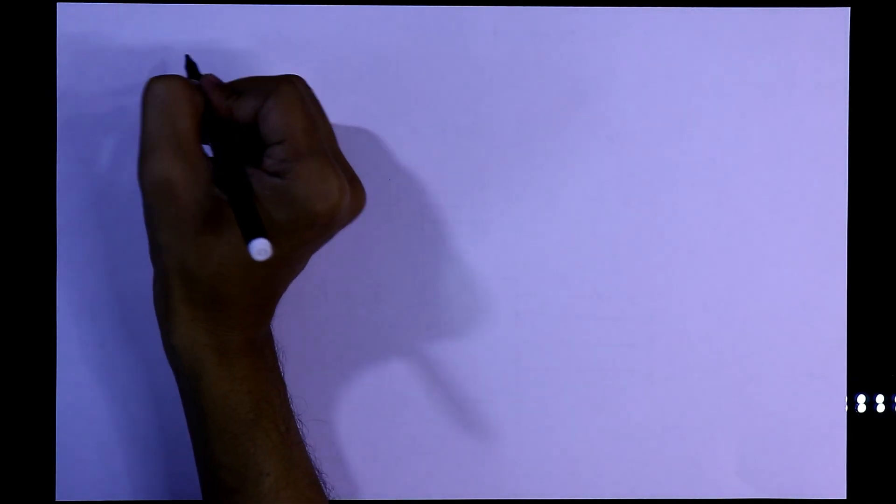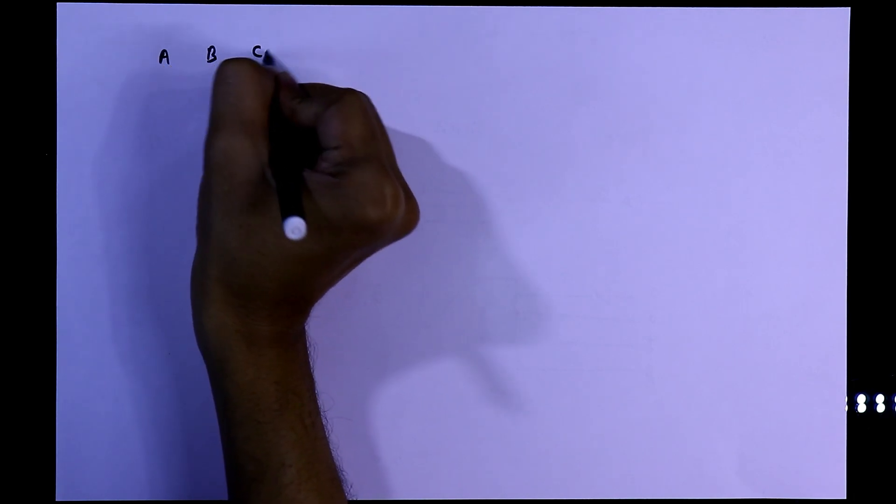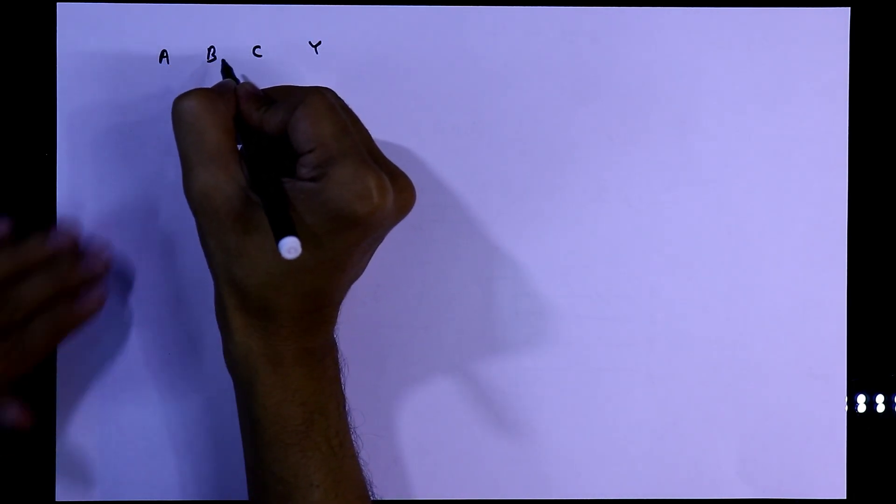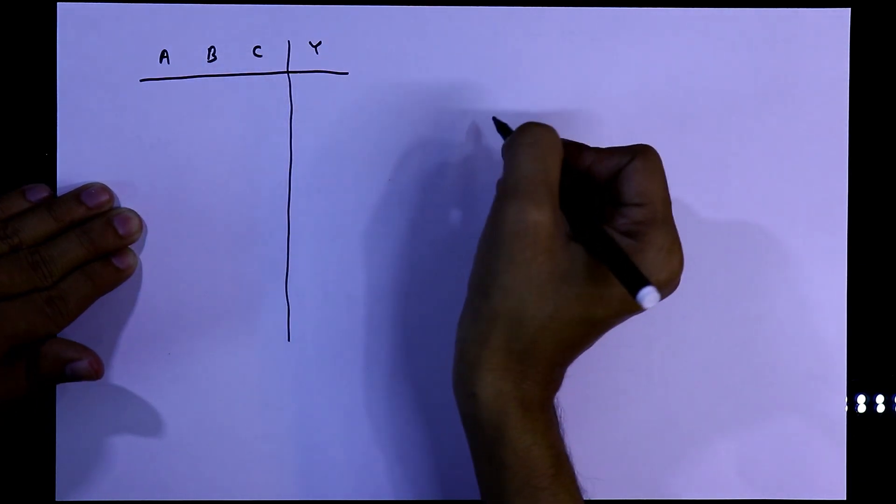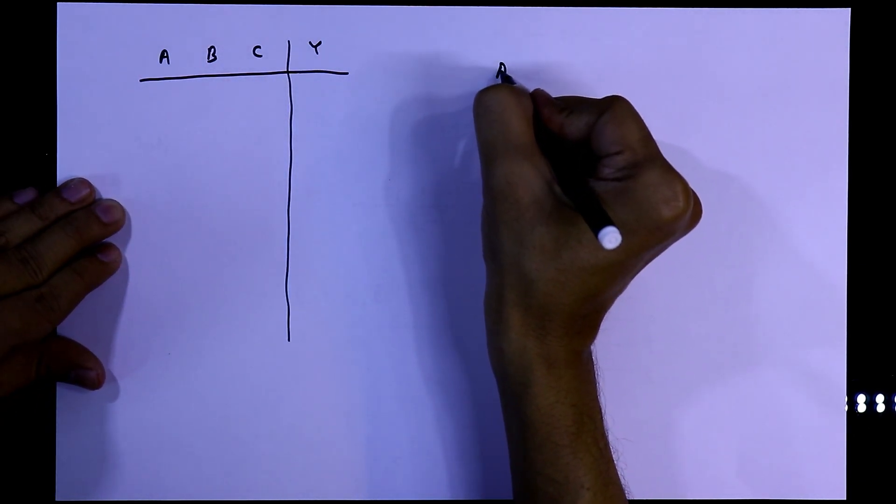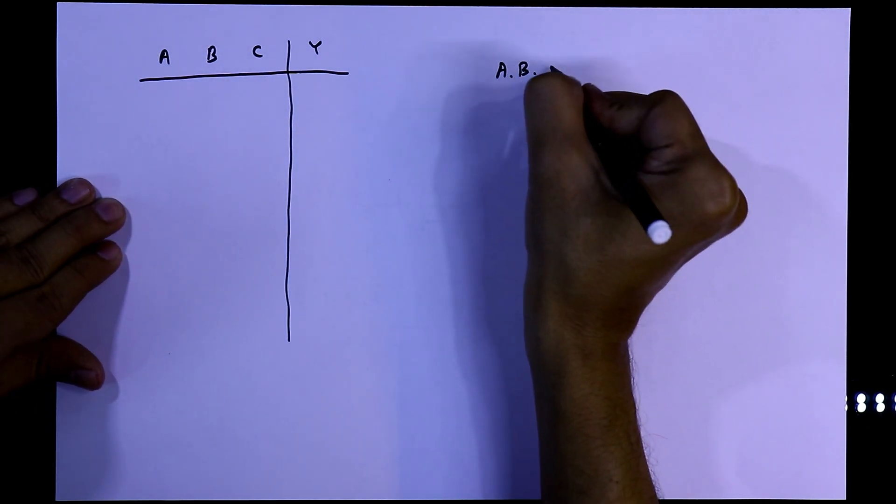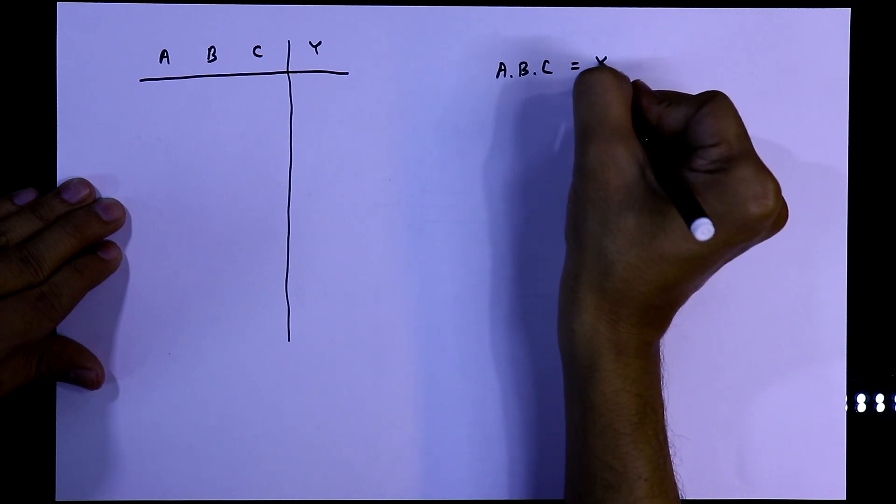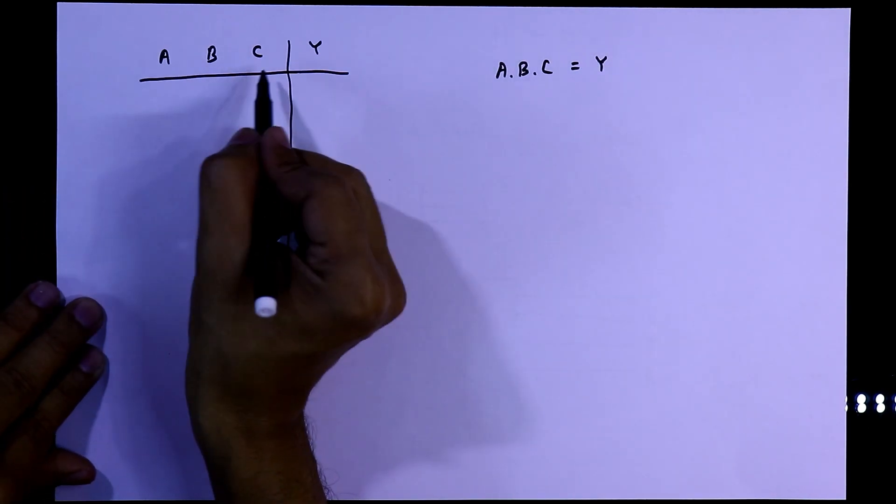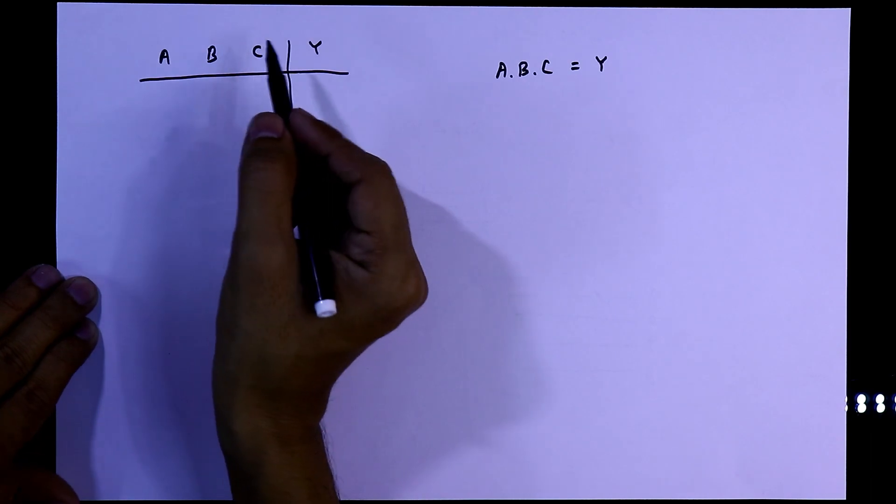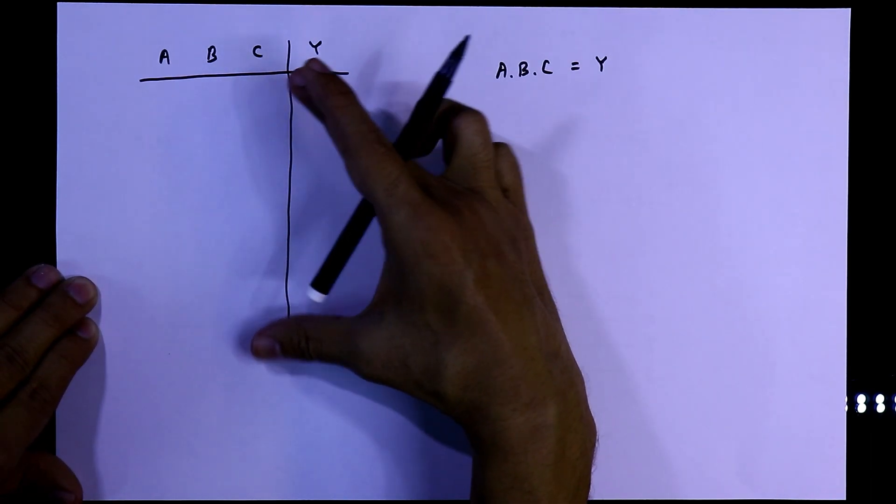We can write the 3-input AND gate as A, B, and C, with Y as the output. Mathematically, we can write A·B·C = Y. As it has 3 inputs, the total combinations will be 8 (2³ = 8).